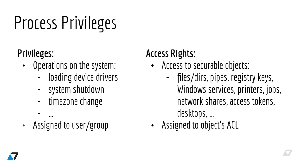Privileges determine the type of system operations a user can perform, such as shutting down the system, loading device drivers, or changing the system time. Privileges are different from access rights in two main ways. First, privileges control access to system-related tasks, whereas access rights control access to securable objects like files, named pipes, network shares, or even access tokens. Second, privileges are assigned to user and group accounts, whereas access rights are assigned to objects' access control lists.